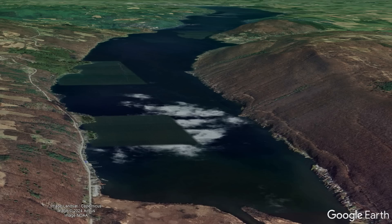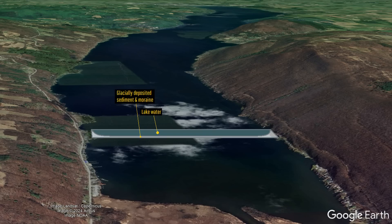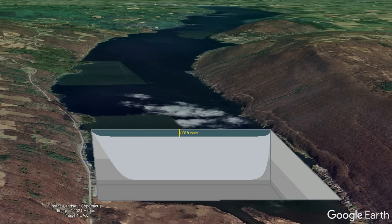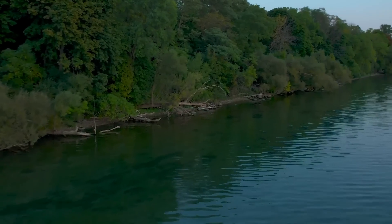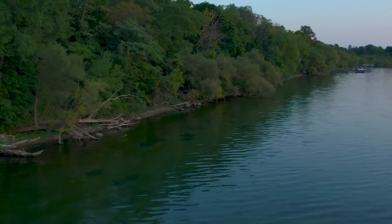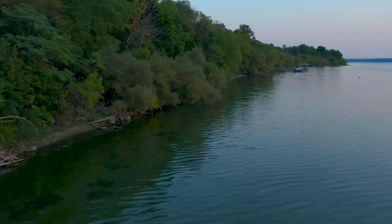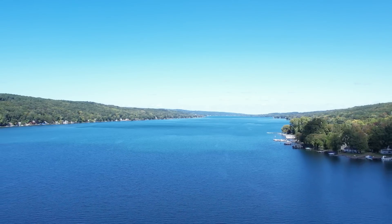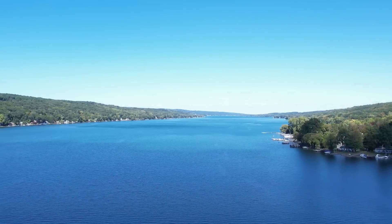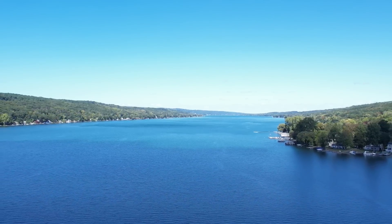Once the last glacial period ended and the associated glaciers retreated from the area 10,000 years ago, they left behind more than 700 feet thick of glacial till, filling much of the original deep valley. This left behind numerous broad U-shaped valleys, which would eventually fill with water to form the modern Finger Lakes, as the underlying glacial till had low porosity, meaning it could hold the water above it quite well.